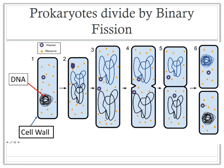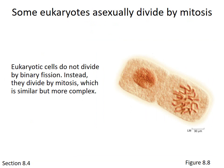In binary fission, the parent cell — a bacterium — must first reproduce its DNA. The one nucleoid replicates and becomes two nucleoids, which separate to either end of the cell. The cell wall then fills in the gap, and you get two identical cells. Eukaryotic cells do not divide by binary fission; instead they divide by mitosis, which is similar but much more complex.